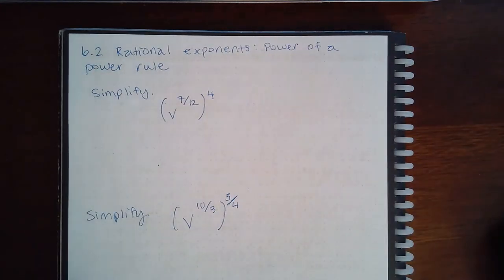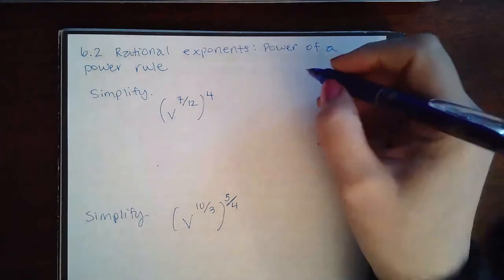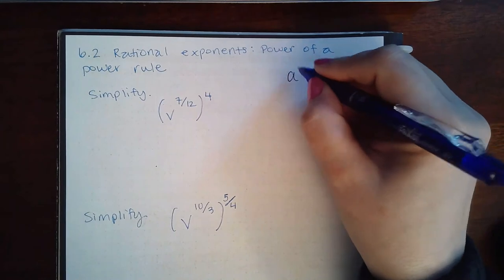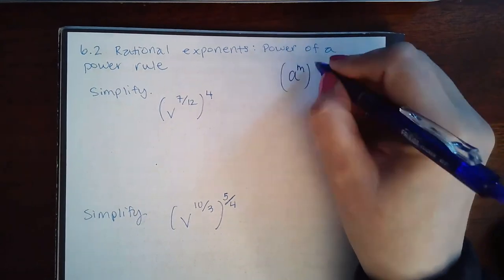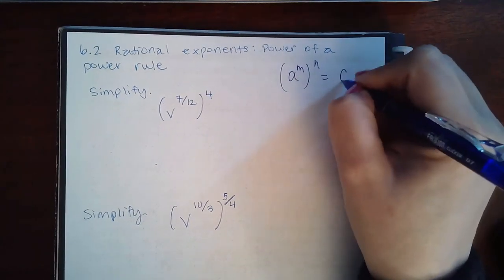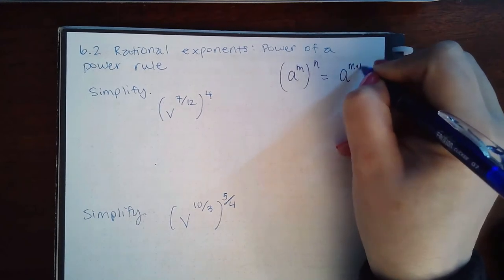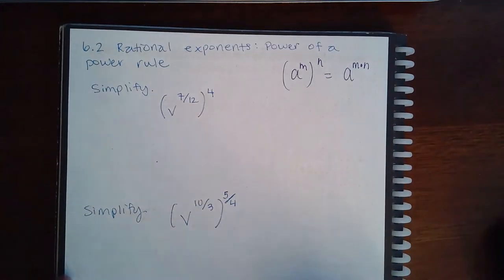Here we have 6.2 rational exponents: power of a power rule. The rule for this is if you have a^m raised to the power n, you just multiply those exponents together.